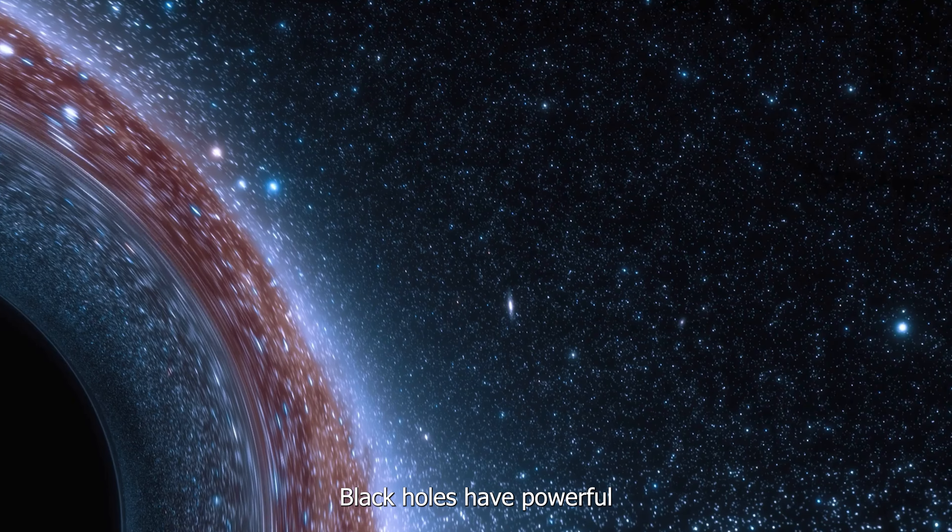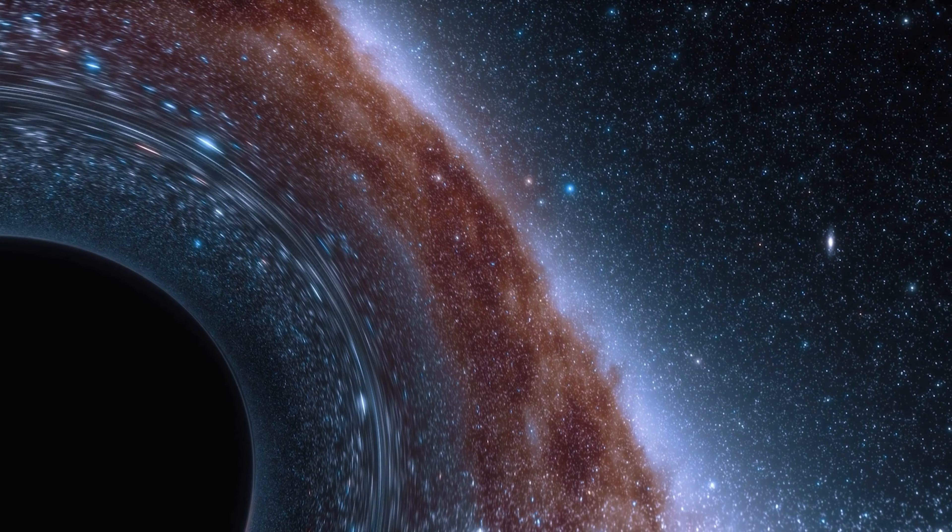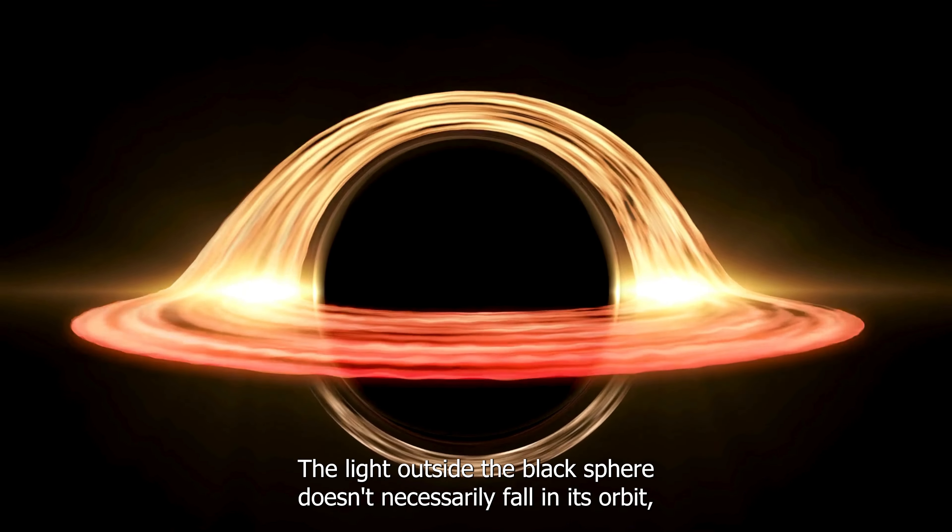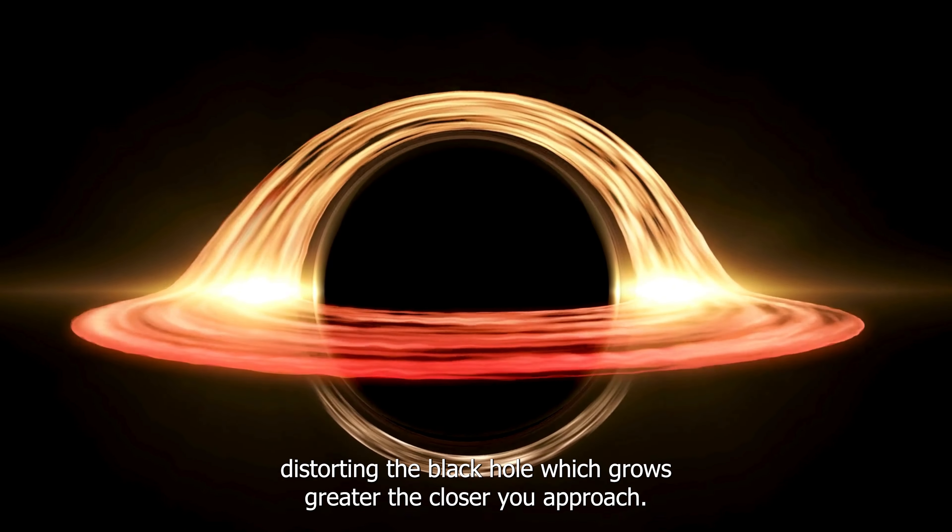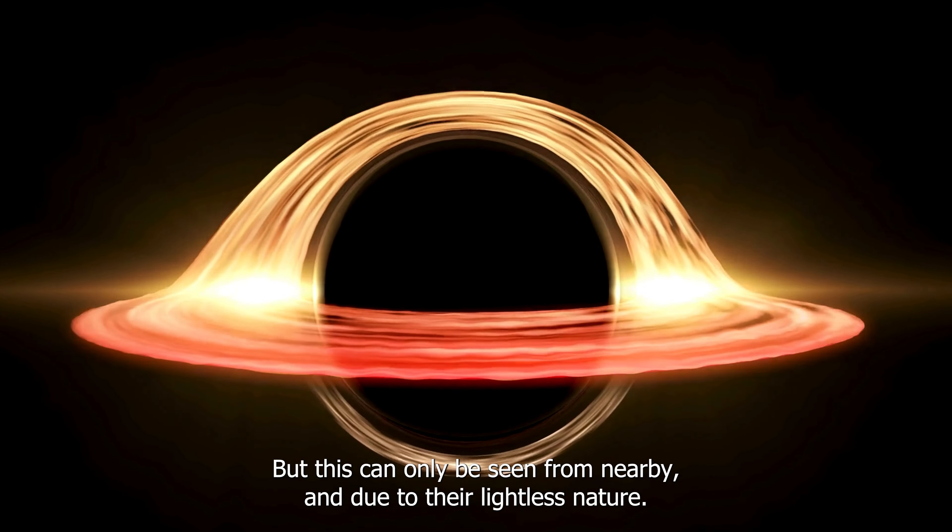Black holes have powerful gravitational fields that distort the light in and around them. The light outside the black sphere doesn't necessarily fall in. It orbits, distorting the black hole, which grows greater the closer you approach, but this can only be seen from nearby.